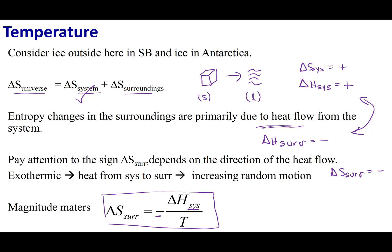Delta S of the surroundings depends on the heat flow of the system, and we put a negative sign to account for direction: delta S surroundings = -delta H system / T. The system has positive entropy; the surroundings have negative entropy. In Santa Barbara, the temperature T is fairly large, so dividing delta H by a large number gives a small delta S of surroundings. Since that is small, the positive delta S of the system dominates and we get a positive delta S universe — a spontaneous process — and the ice melts.